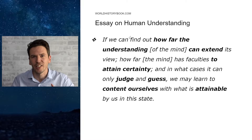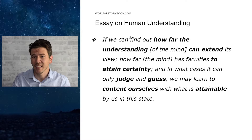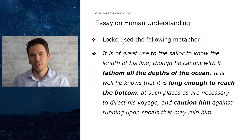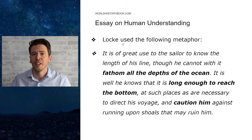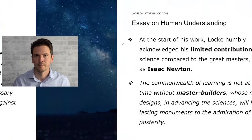If we can find out how far the understanding of the mind can extend its view, how far the mind has faculties to attain certainty, and in what cases it can only judge or guess, we may learn to content ourselves with what is attainable by us in this state. In other words, we have to find out what we can reasonably know as human beings and what we cannot. To illustrate this idea, Locke used the following metaphor: it is of great use to the sailor to know the length of his line — the line used to measure the depth of the water — though he cannot with it fathom all the depths of the ocean. It is well he knows that it is long enough to reach the bottom at such places as are necessary to direct his voyage and caution him against running upon shoals that may ruin him. That is to say, the line cannot be used to measure the depth of the entire ocean, but is actually very useful on a small scale in order not to hit ground.